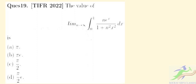Hello students, welcome to Short Sir Classes. Today I'm discussing a question from the TIFR 2022 paper. We need to find the value of the limit as n tends to infinity of the integration from 0 to 1 of n times e to the power x divided by 1 plus n squared x squared, dx.